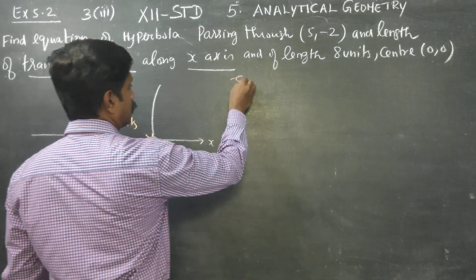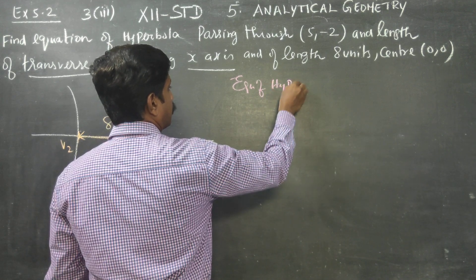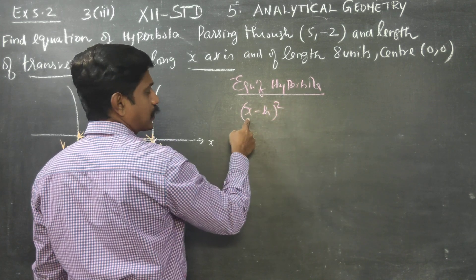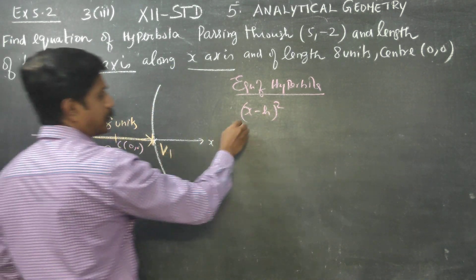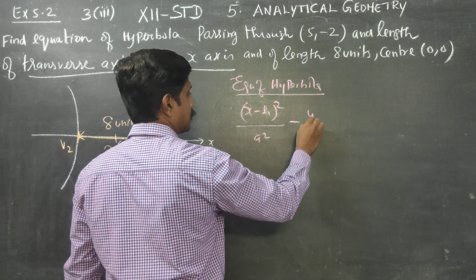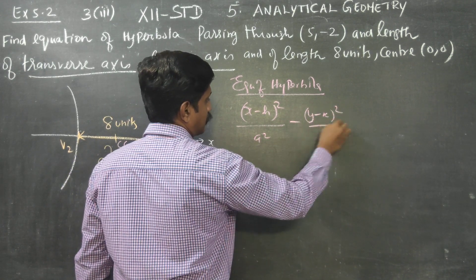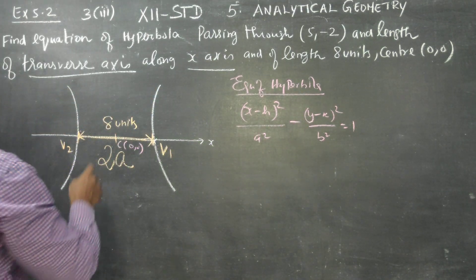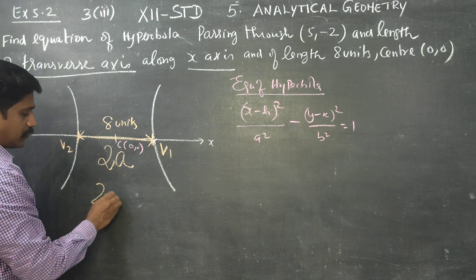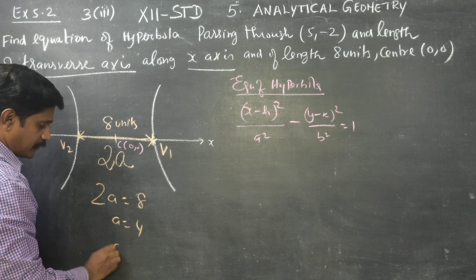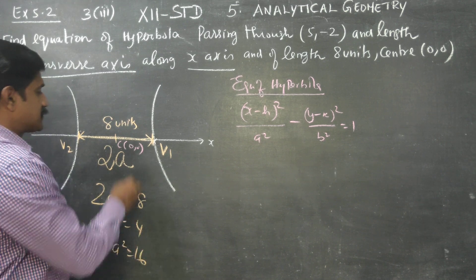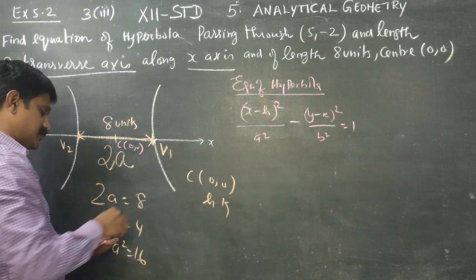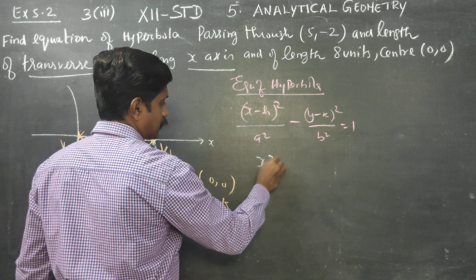We can write the formula. The equation of the hyperbola is (x - h)² over a². The distance between V1 and V2 gives us a square, and you will be getting x squared by a².